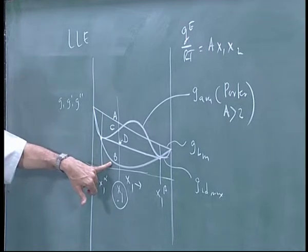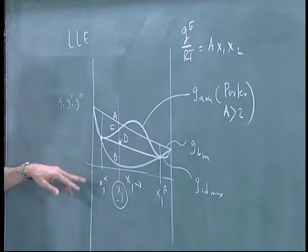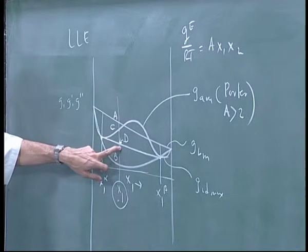Now this ideal mixing does not count because this is the only hypothetical case. If they mix ideally, then they are miscible in all proportions. So A, C, D are the ones that count and D has the lowest free energy.